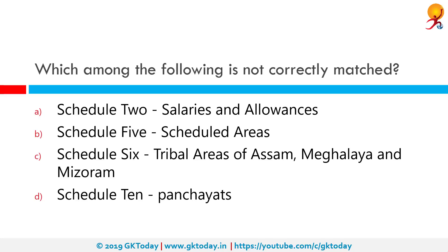Which among the following is not correctly matched? Among the given options, Option D is not correctly matched. Schedule 10 is actually on disqualification on grounds of defections, inserted by the 52nd Amendment, whereas Schedule 11 lists 29 subjects under the Panchayats. So Option D is not correctly matched.